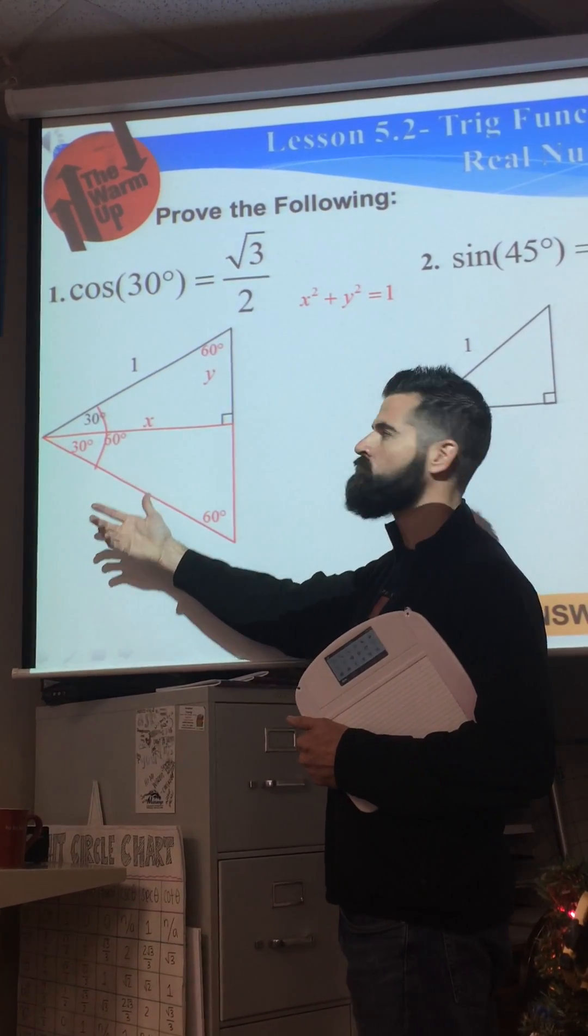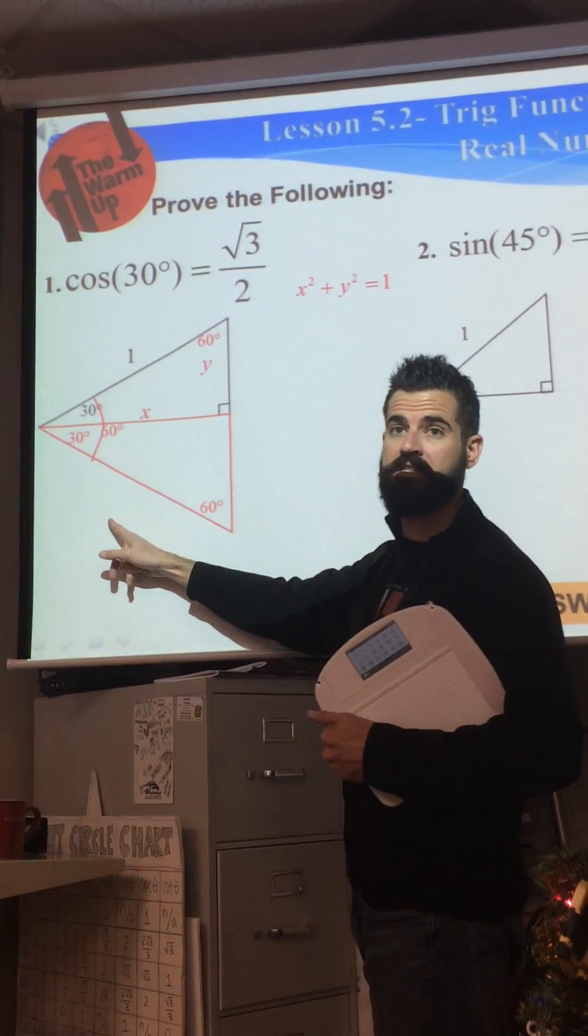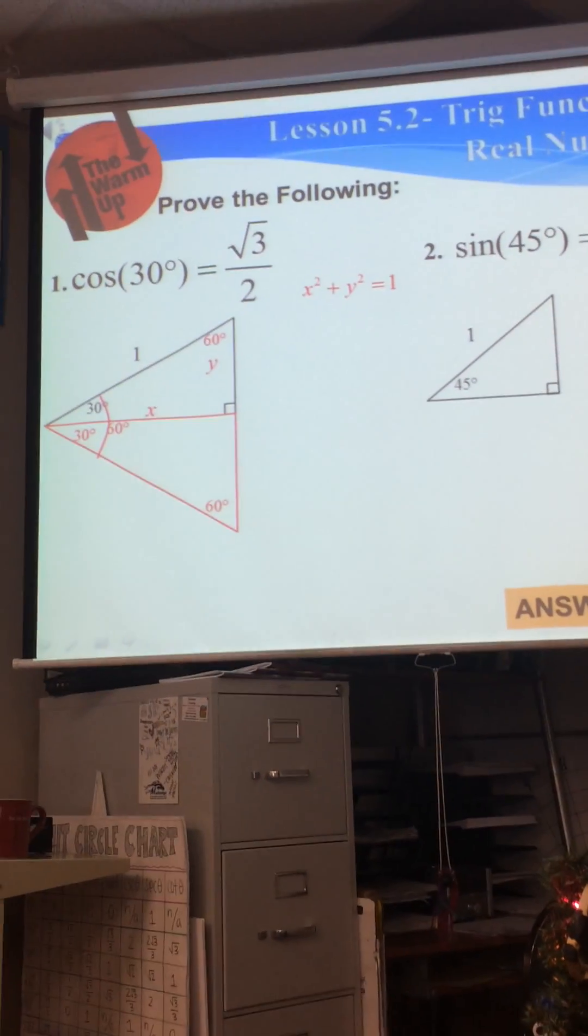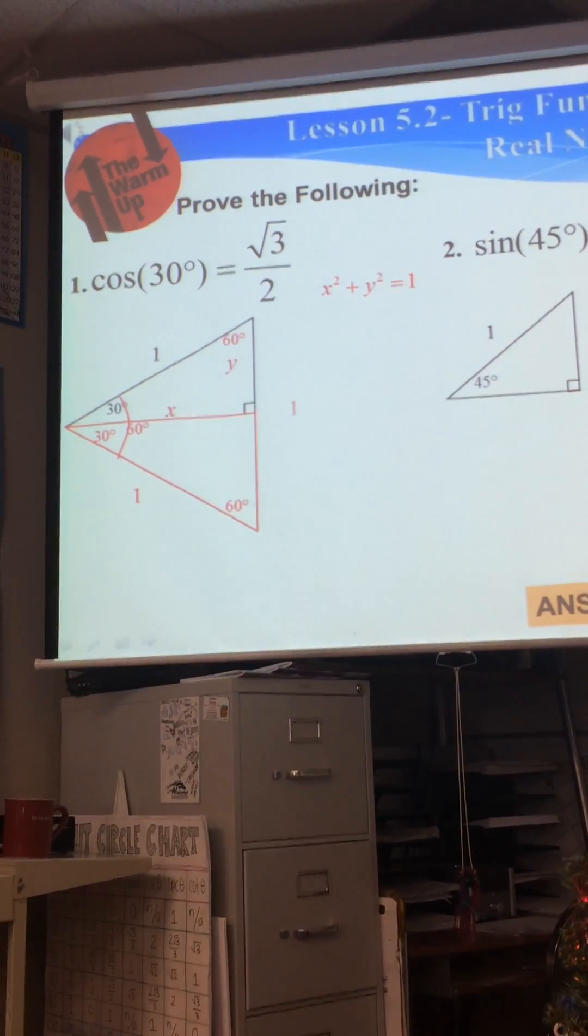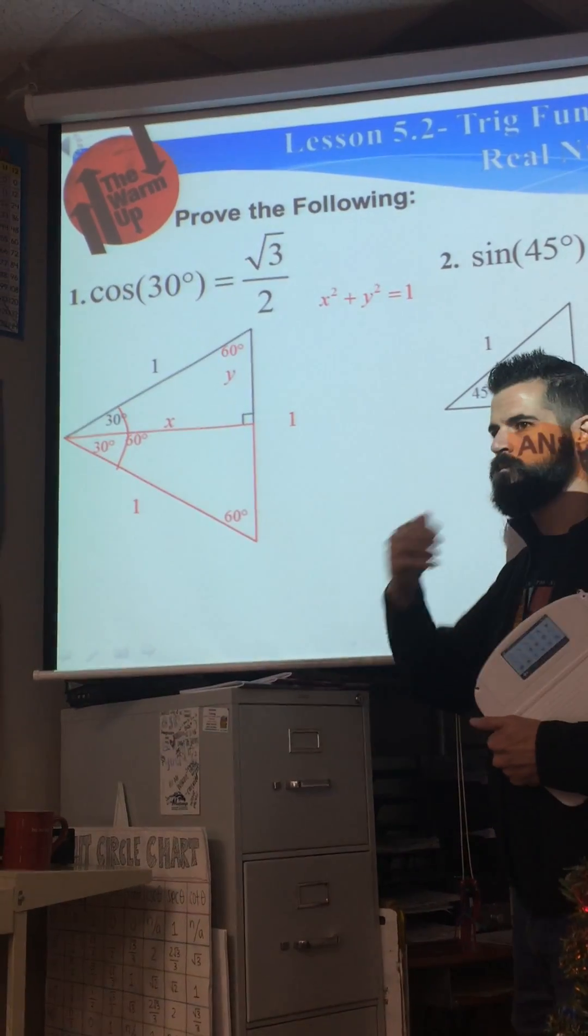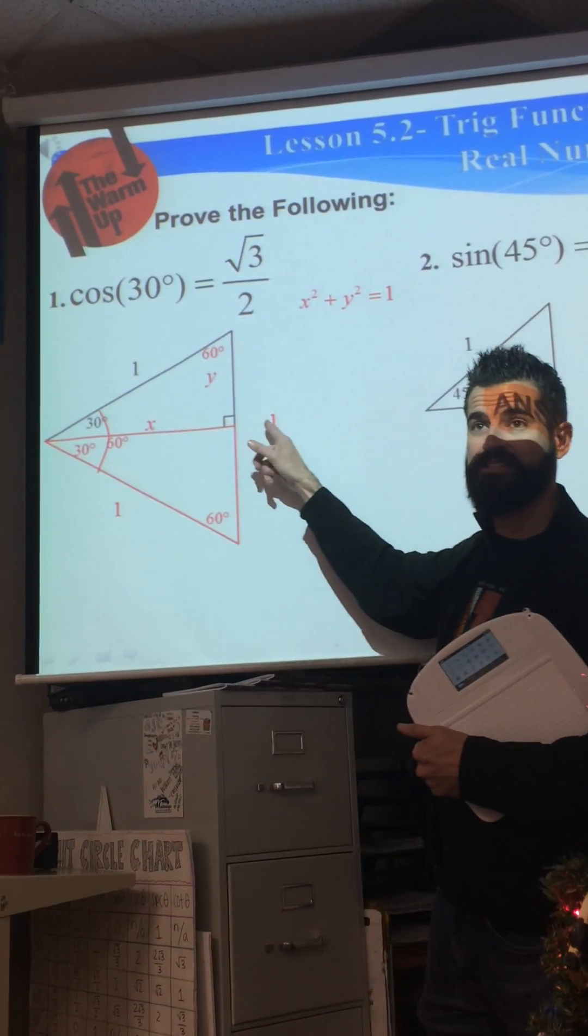This side we already know, this side is 1, so then what is this side? 1. What is that other side? 1. Okay, so now how is that going to help us figure out our x and our y? Are any of those values good? If this is a perpendicular bisector, do you remember that?